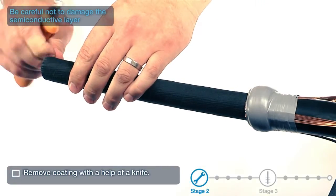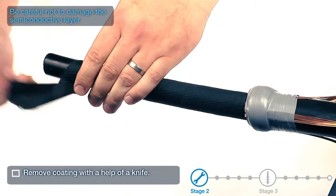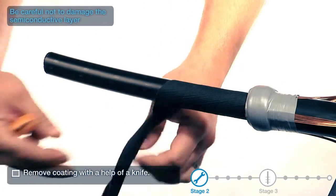Remove coating with the help of a knife. Be careful not to damage the semi-conductive layer.